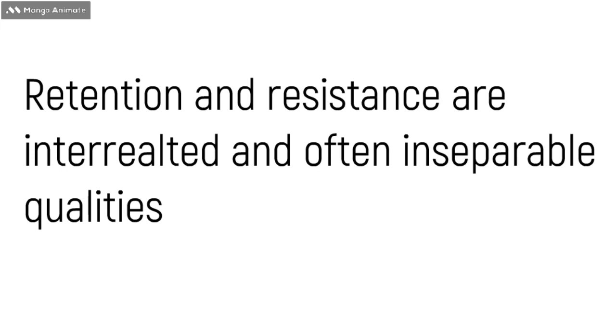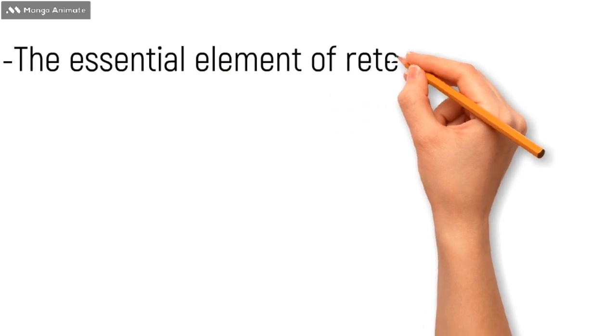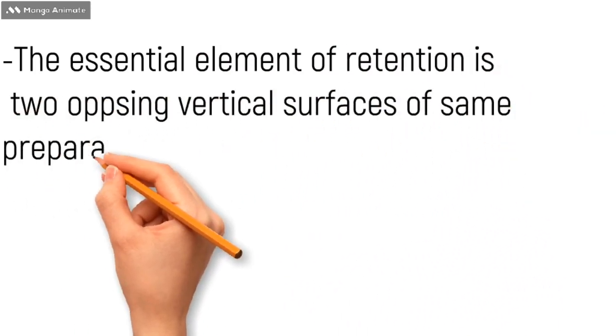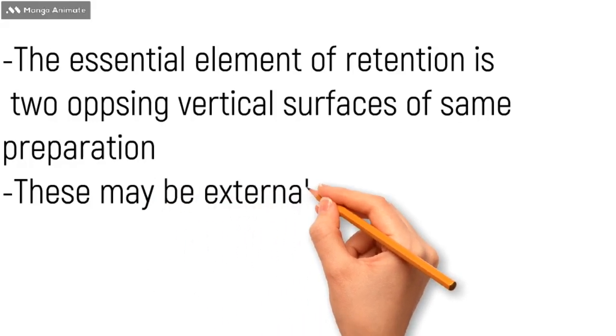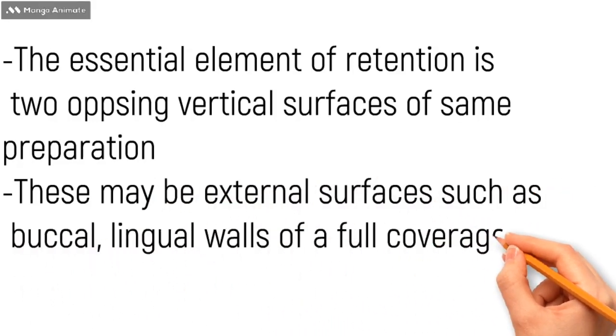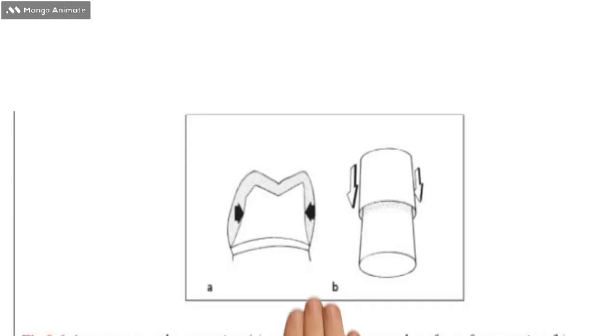Because retention and resistance are directly proportional to one another, we are going to study the same factors for both qualities. The essential element of retention is two opposing vertical surfaces of the same preparation. These surfaces may be the external surfaces such as buccal and lingual walls of a full coverage crown in extracoronal restoration.